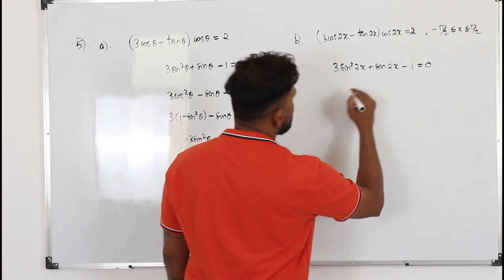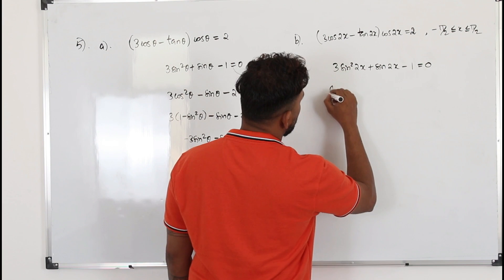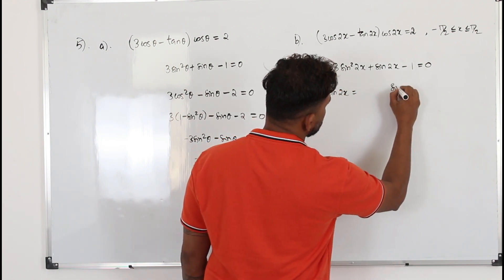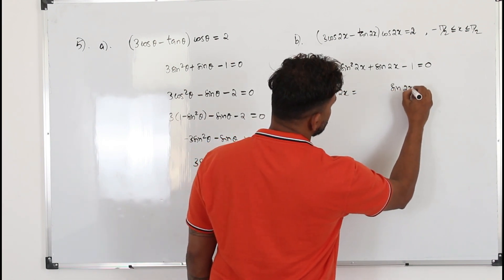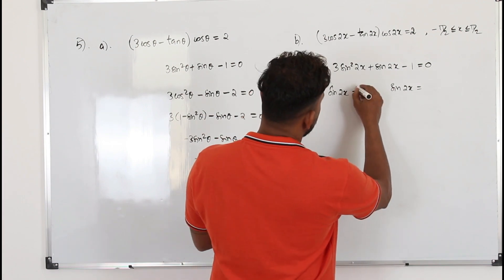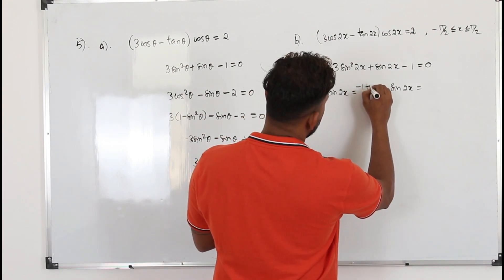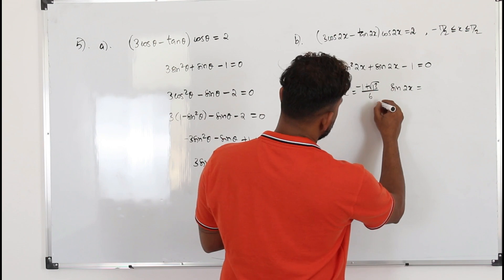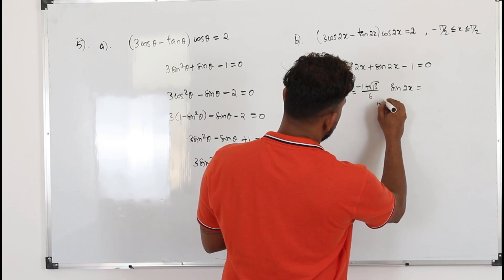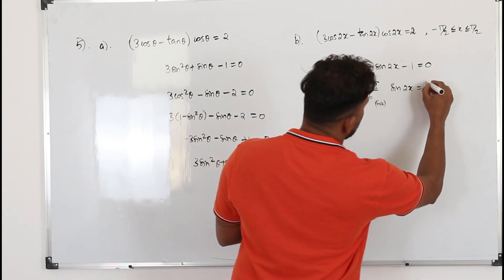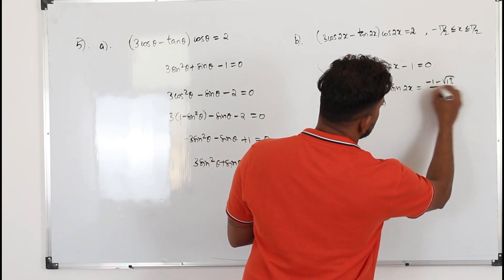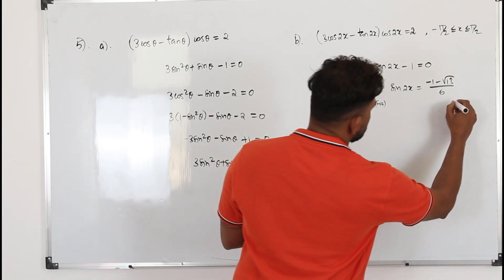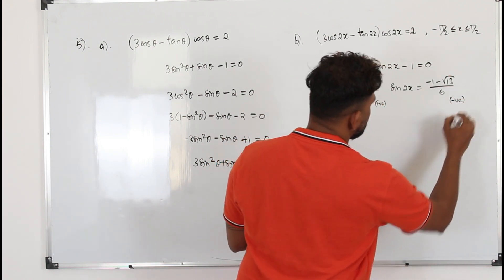This is a quadratic equation. Solving it gives two values: the first is (minus 1 plus root 13) over 6, which is a positive number, and the second is (minus 1 minus root 13) over 6, which is a negative number.